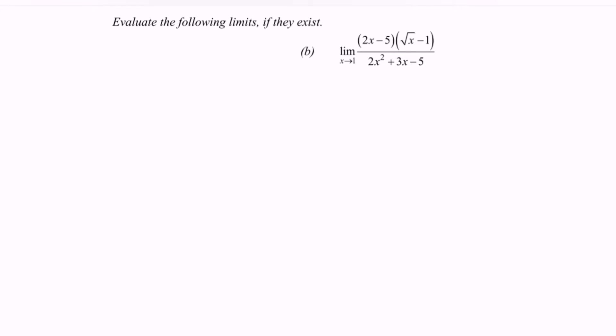First of all, I'm going to substitute the value 1 into the function. After substituting, we will have 2 minus 5, which gives negative 3. Then the square root of 1 minus 1 gives 0, so negative 3 multiplied by 0 gives 0 for the numerator.